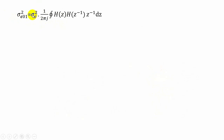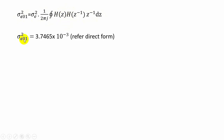Now we find the output noise power due to the first error signal. The output noise power equals the input noise power multiplied by (1/2πj) ∮ H(z)·H(z⁻¹)·z⁻¹ dz, which is the same integral computed for the whole H(z) in the direct form analysis. So the output noise power due to e1(n) = 3.7465 × 10⁻³.